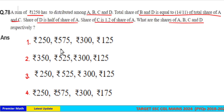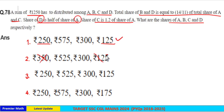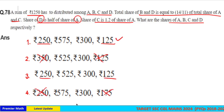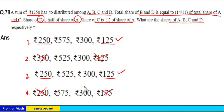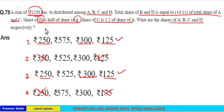Since the share of d is half of a, checking the options: 250 and 125 — correct. 350 and 125 — eliminated. 250 and 125 — correct. 250 and 175 — eliminated. Now, the share of c is 1.2 times the share of a, so c is fixed at 300. So a, c, d are fixed.